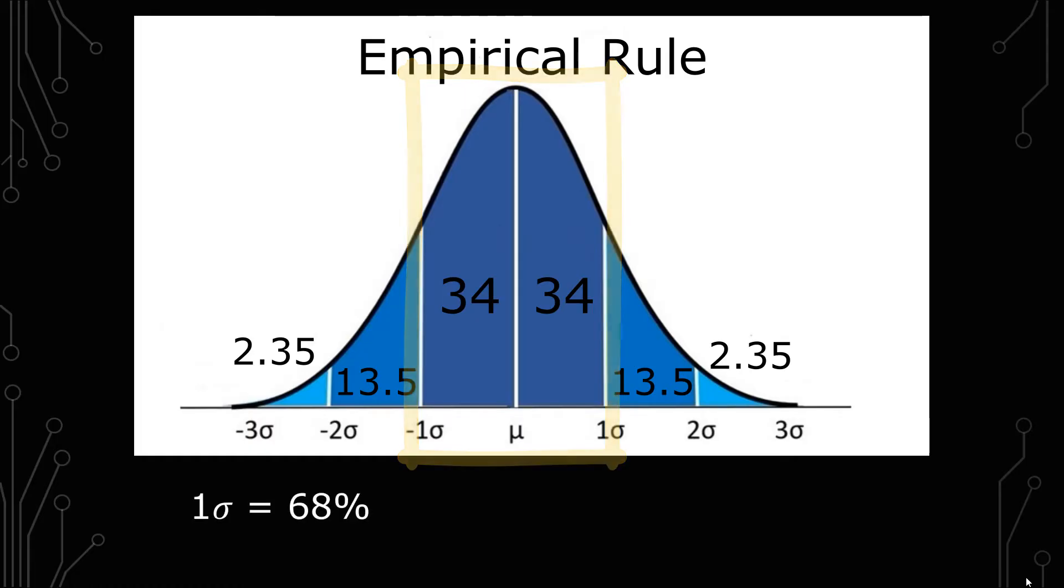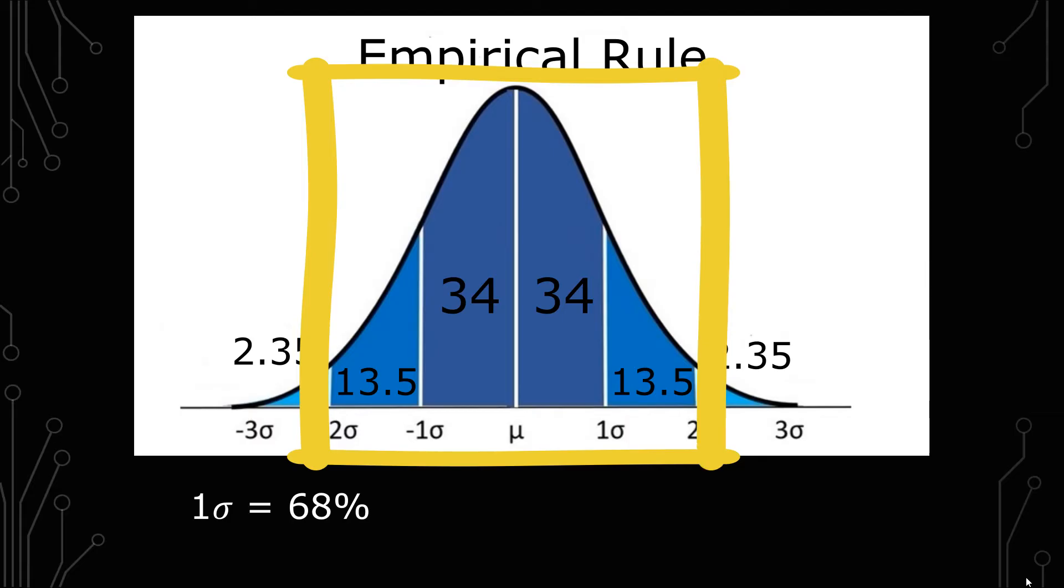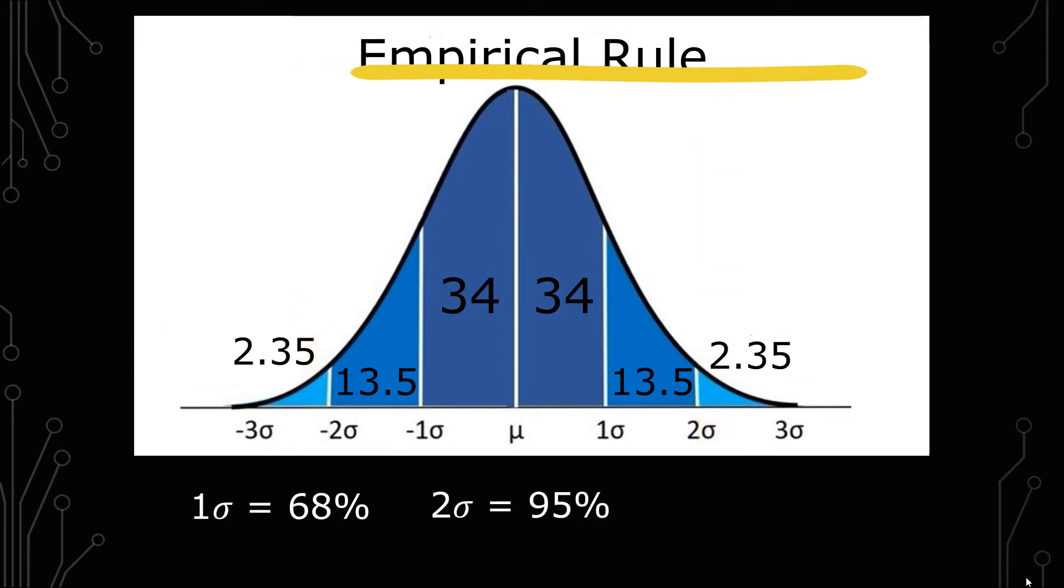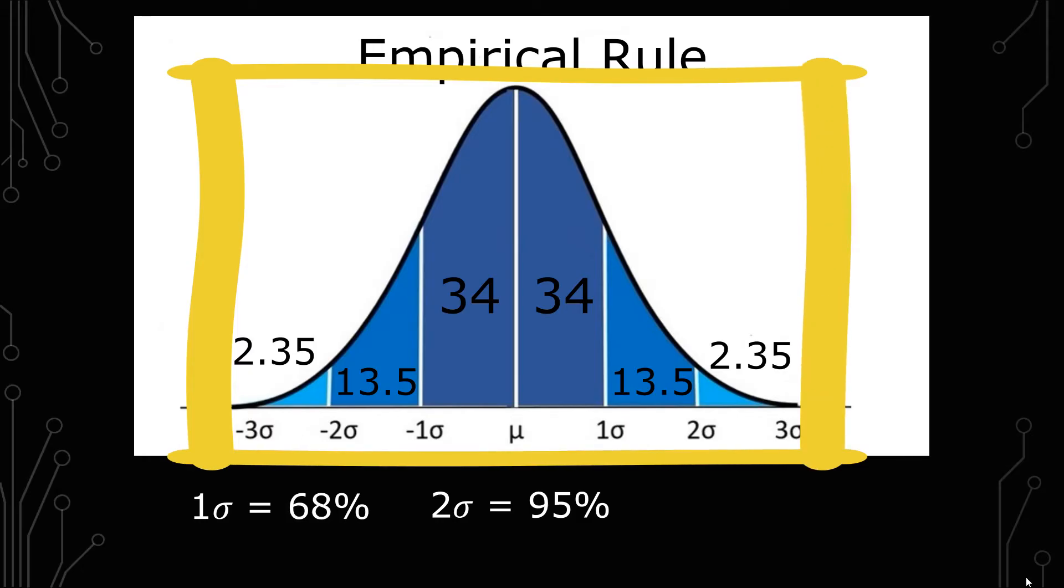When you do two standard deviations away from the mean, there's 13.5 in addition to the 34% on each side or 95% total. And when you look at three standard deviations around the mean, you get that extra 2.35 on top of the other two to give you 99.7% of what's around the mean.